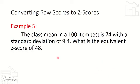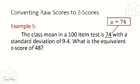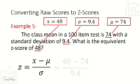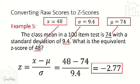Example number 5: the class mean in a 100-item test is 74 with a standard deviation of 9.4. What is the equivalent Z score of 48? We identify the given values: mean of 74, standard deviation of 9.4, and a raw score of 48. Substituting into the formula: Z = (48 − 74) / 9.4, and the answer will be negative 2.77.